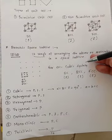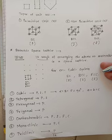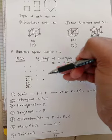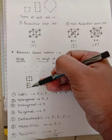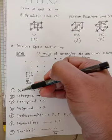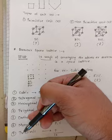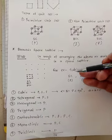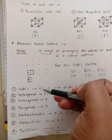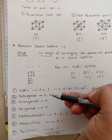For example, the cubic system has three sub-lattices or three Bravais lattices: simple cubic, body-centered cubic, and face-centered cubic. There are a total of seven crystal systems: cubic, tetragonal, hexagonal, trigonal, orthorhombic, monoclinic, and triclinic. The cubic system has three sub-lattices: simple cubic, body-centered cubic, and face-centered cubic. Tetragonal has two sub-lattices: simple tetragonal and body-centered tetragonal.